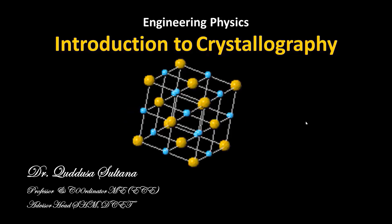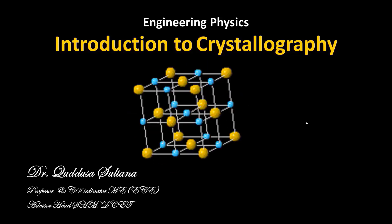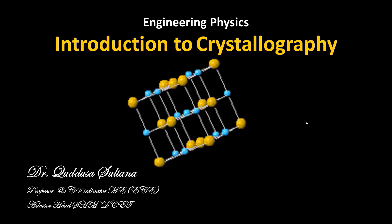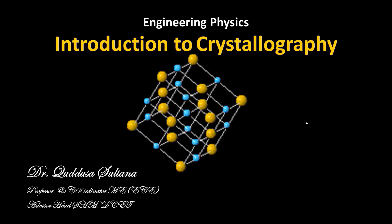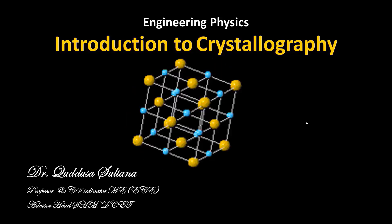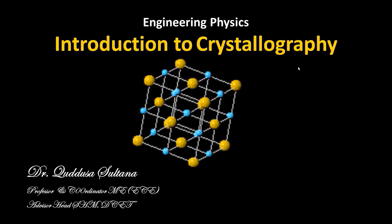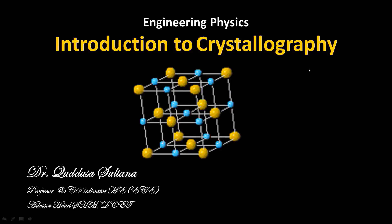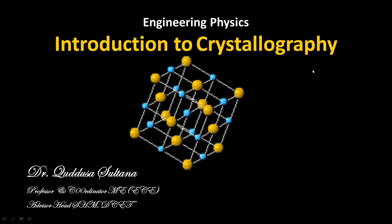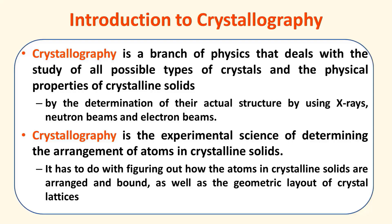The topic under focus is introduction to crystallography. What is the meaning of crystallography and what is the significance of it? How we define it? And different parameters related to this term crystallography are explained here. The word crystallography comprises of two terms: crystal and graphy. Graphy means science or study. So crystallography means the science or the study of crystals.